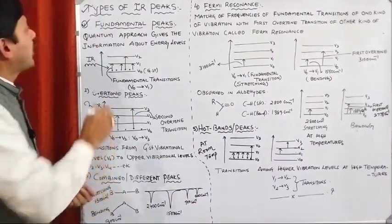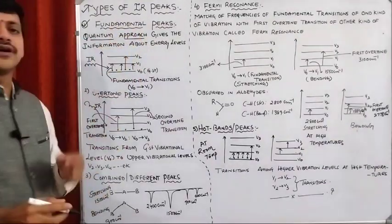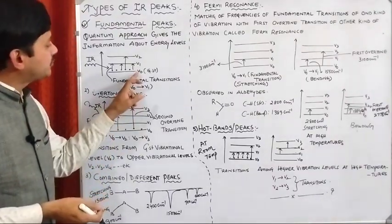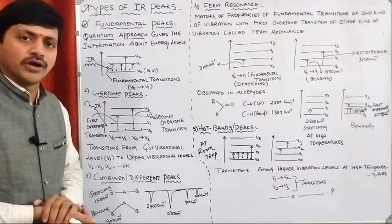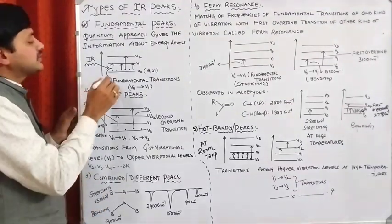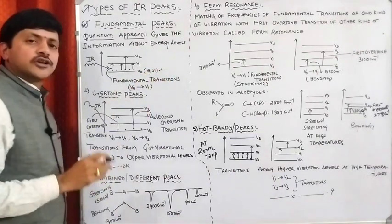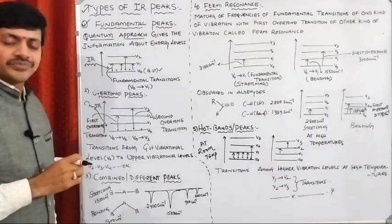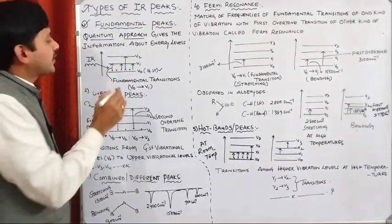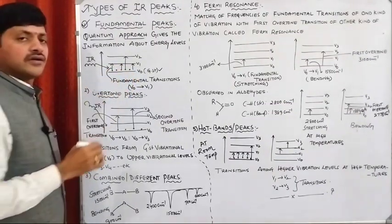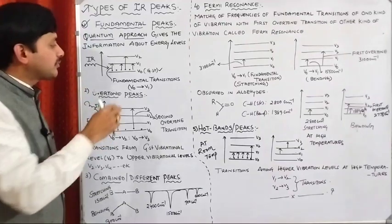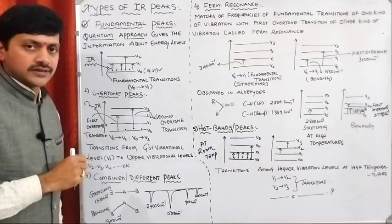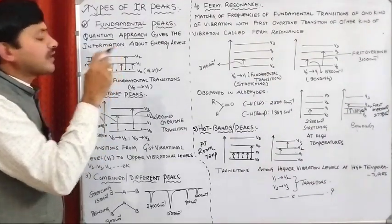The quantum approach deals with the generation of energy levels in a molecule. According to the quantum approach, we observe vibrational levels in the molecule. Initially, all the particles are present at the ground state vibrational level, commonly represented as V0. The majority of transitions occur from V0 to V1 — that is, shifting of the particle from V0 to V1 by absorption of IR radiation — and this is commonly called a fundamental transition.